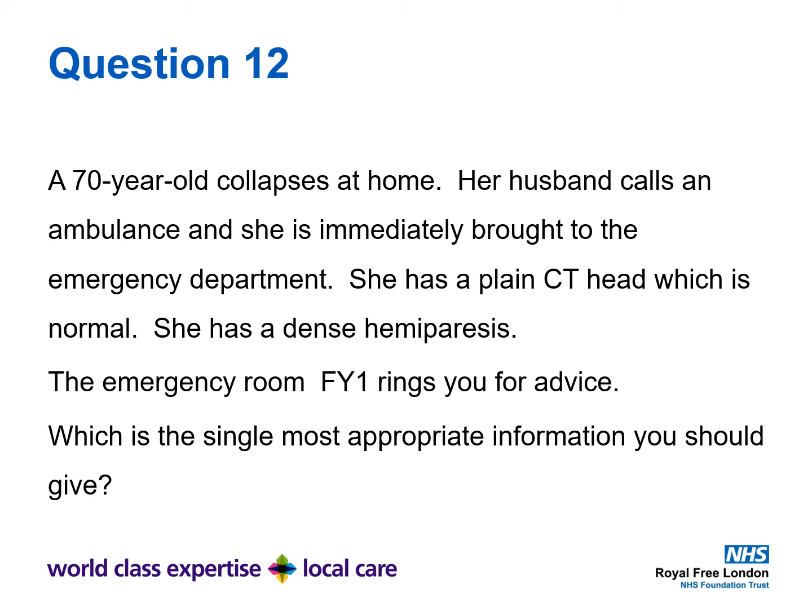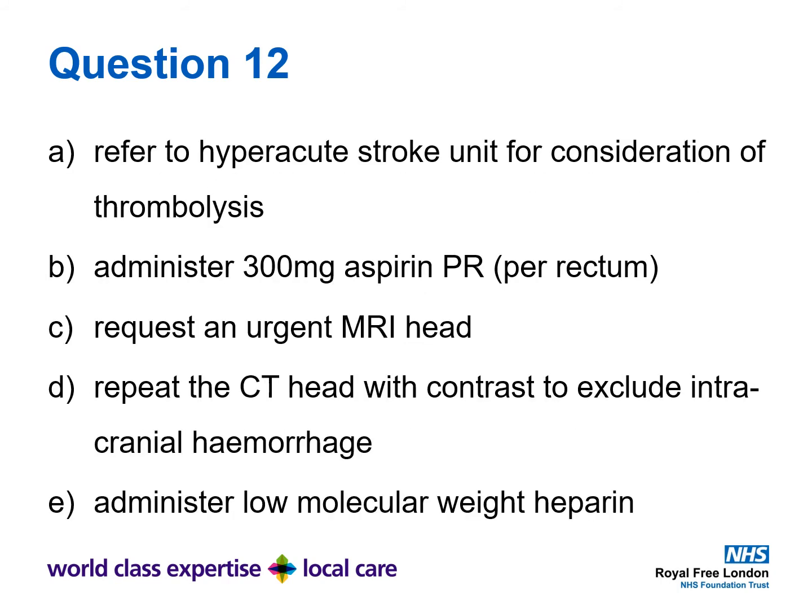Question 12. A 70 year old collapses at home. Her husband calls an ambulance and she is immediately brought to the emergency department. She has a plain CT head which is normal. She has a dense hemiparesis. The emergency room FY1 rings you for advice. Which is the single most appropriate information you should give? A: Refer to hyperacute stroke unit for consideration of thrombolysis. B: Administer 300 mg of aspirin rectally. C: Request an urgent MRI head. D: Repeat the CT scan with contrast to exclude intracranial haemorrhage. E: Administer low molecular weight heparin.